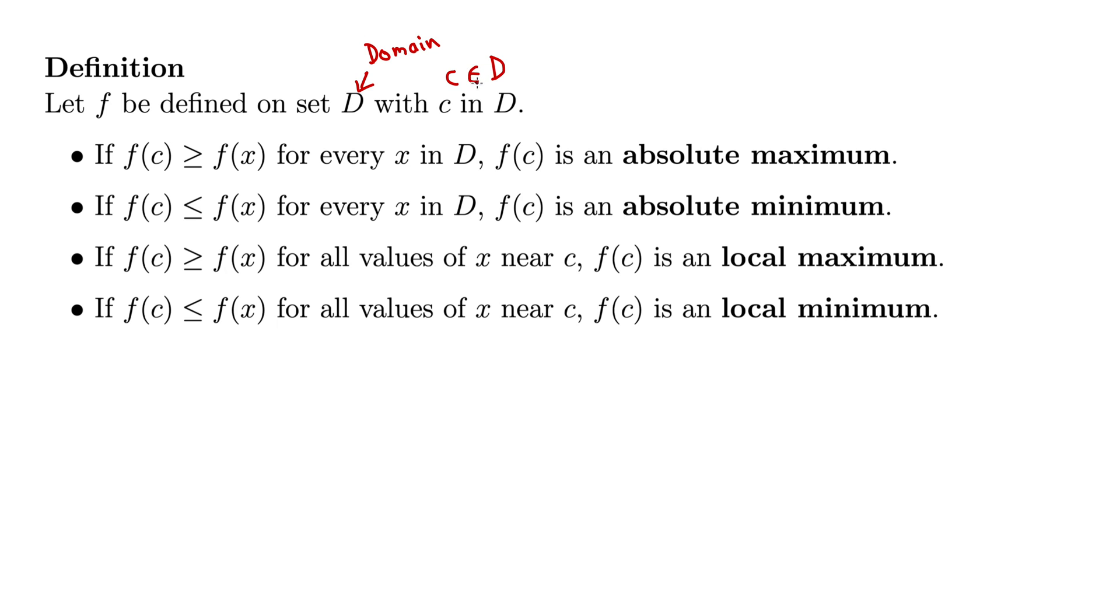If F of C is greater than or equal to F of X, for every X, for every X in the set D, then we say F of C is an absolute maximum.